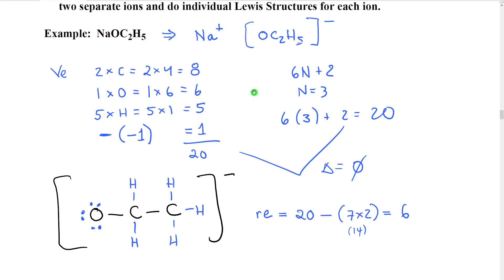If we do 6n plus 2 now, in this formula we have two carbons, one oxygen, five hydrogens. We cross out the hydrogens. We have only three non-hydrogen atoms, so n is 3. 6 times 3 plus 2 is 20. So you can see 20 valence electrons. 6n plus 2 is 20. They're the same, so therefore we have no multiple bonds.